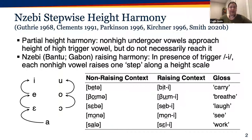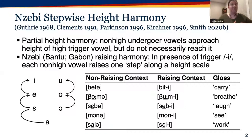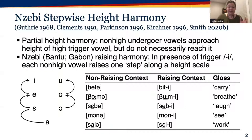One pattern is exemplified by the height harmony of Nzebi, in which the high verbal suffix vowel E triggers raising of preceding root vowels. Underlying high-mid vowels raise to become high like the trigger vowel, but underlying low-mid and low vowels don't become high. Instead, low-mid vowels become high-mid and low vowels become low-mid — they approach the trigger's height rather than taking it on completely.